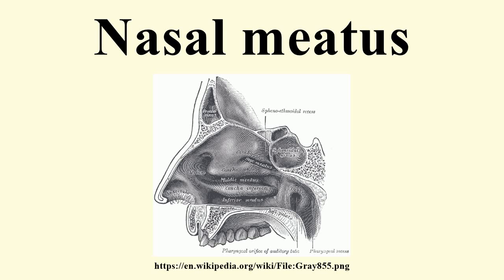A nasal meatus is a nasal passage of the nasal cavity, of which there are three: the superior meatus, middle meatus, and inferior meatus. These nasal meatuses are also known as nasi meatus superior, nasi meatus medius, and nasi meatus inferior. The nasal meatuses are located beneath each of the corresponding nasal conchae. In the case where a fourth supreme nasal conchae is present, there is a fourth supreme nasal meatus structure.